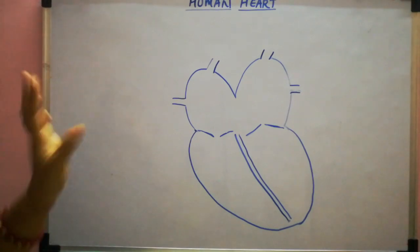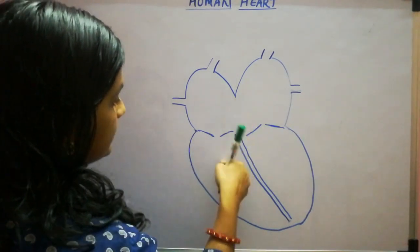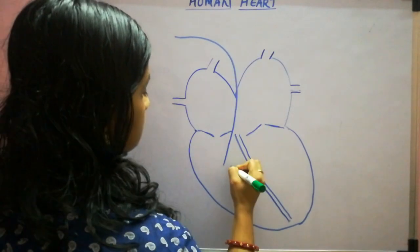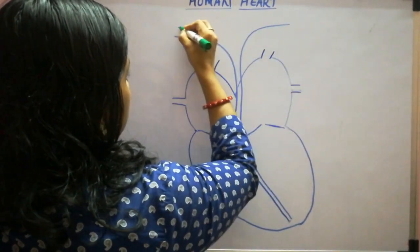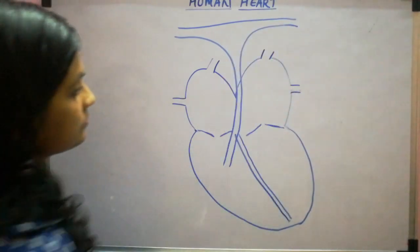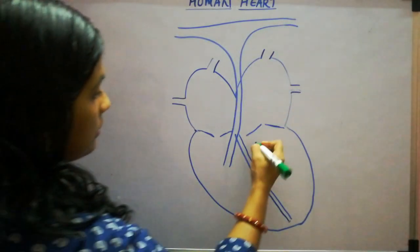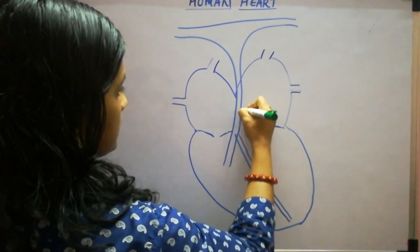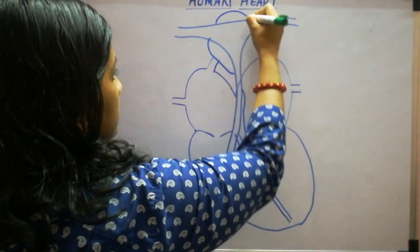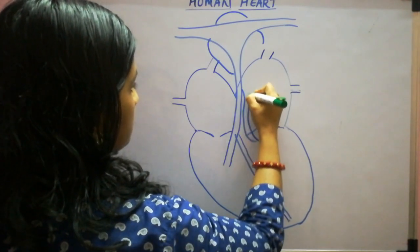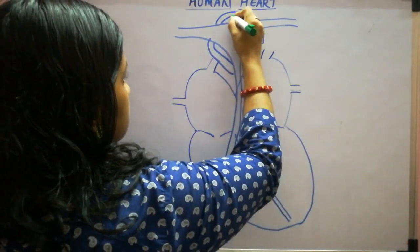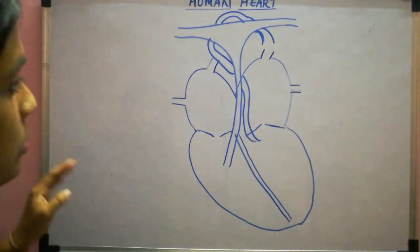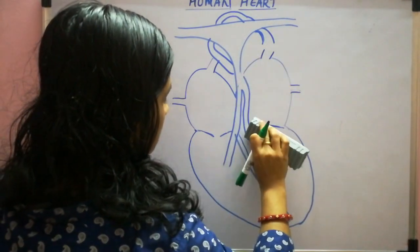Next are the arteries. From the right side you have to draw the first artery — make a T shape like this and join this part. The next artery, which is the biggest artery, you have to start from the left side. Make a partial S shape starting from this side, and make it double.